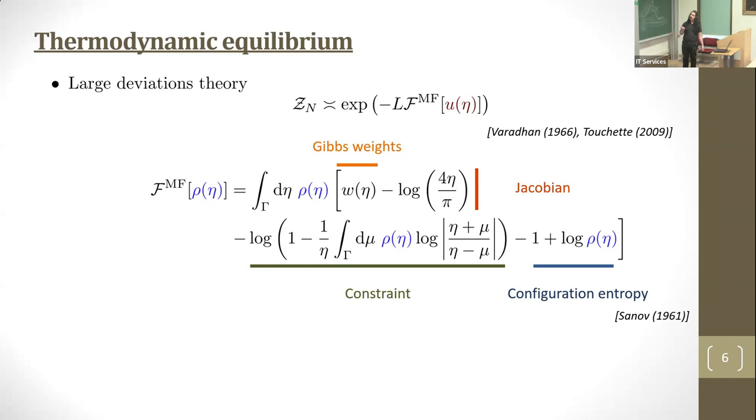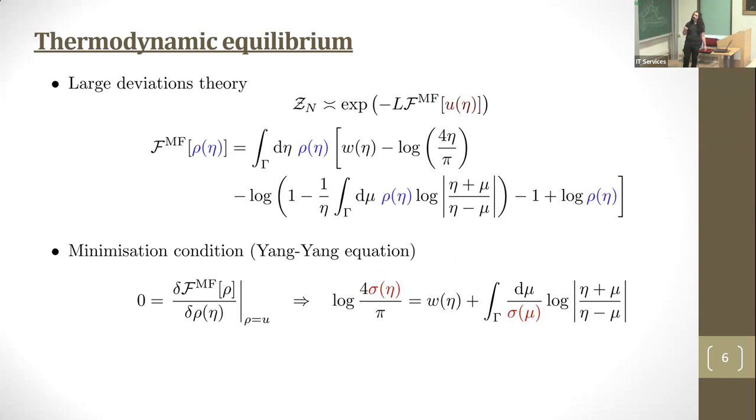f_mf takes this form. The mean field approximation comes from the fact that the integral is of the density of states. You can recognize the Gibbs weights. This Jacobian term comes from integrating over soliton momenta proportional to eta squared. This is the constraint, and this is configuration entropy from Sanov's theorem regarding large deviations of the empirical measure.